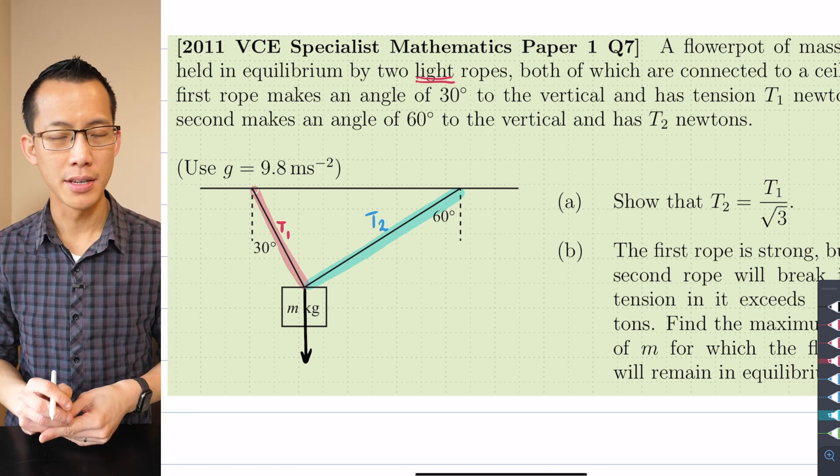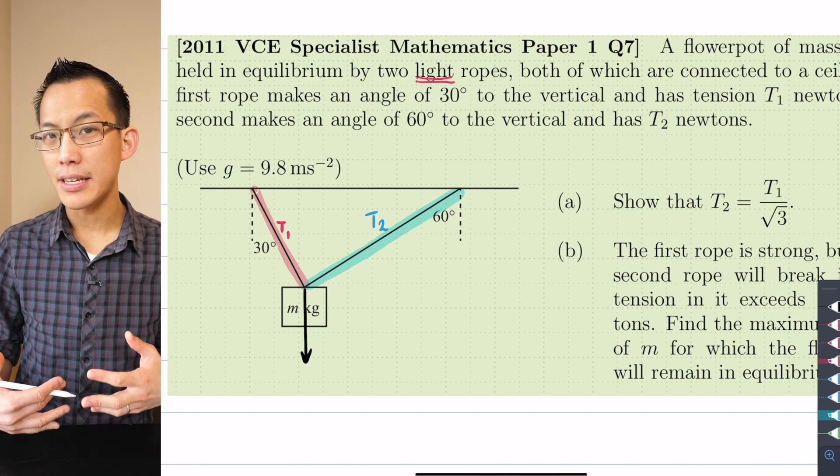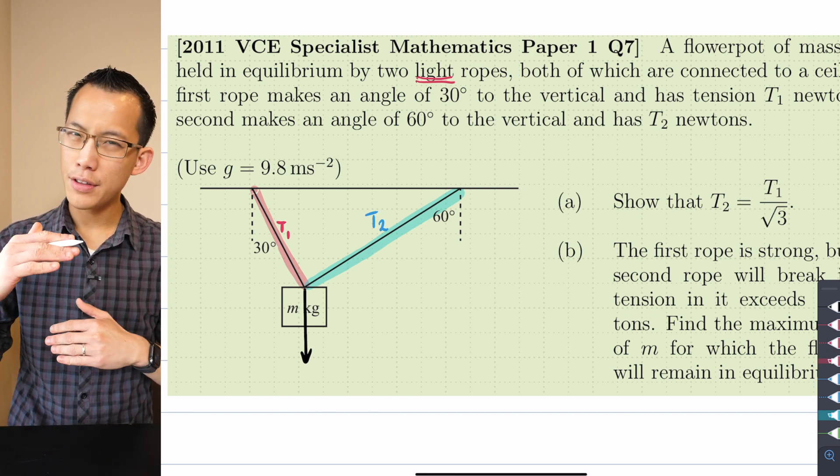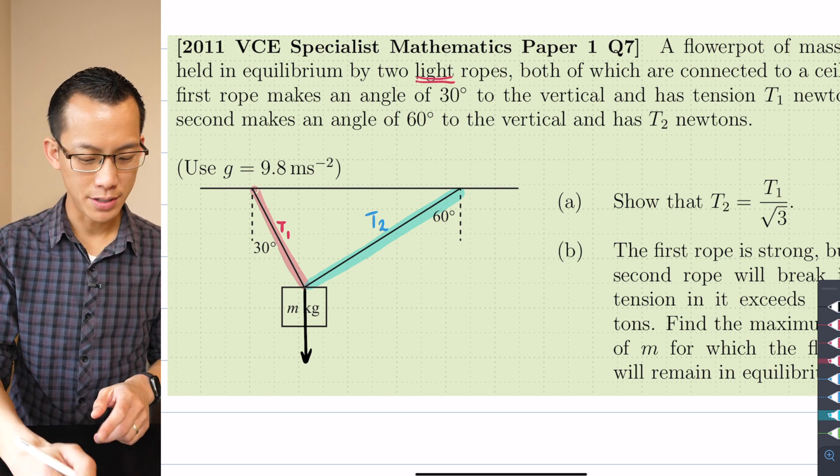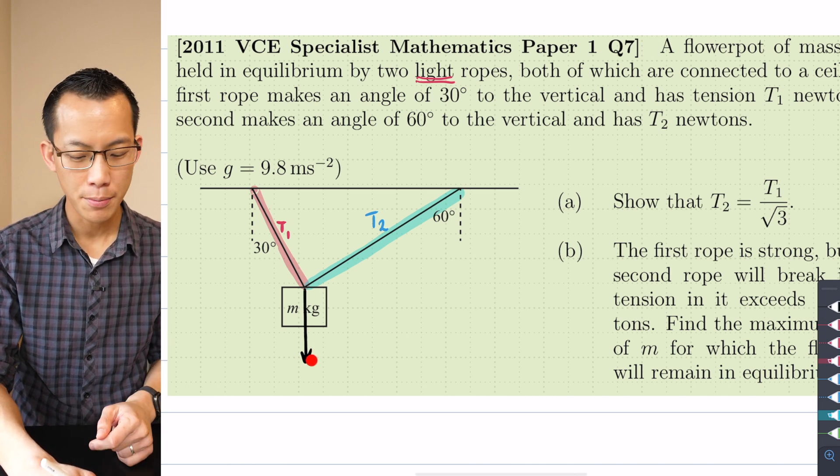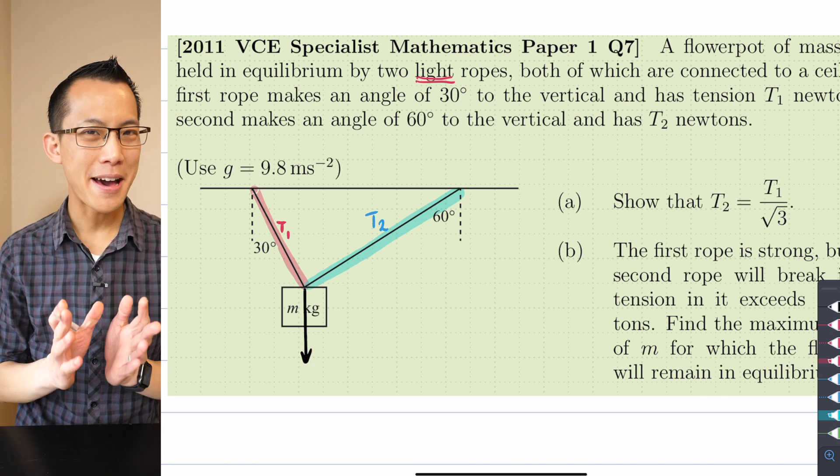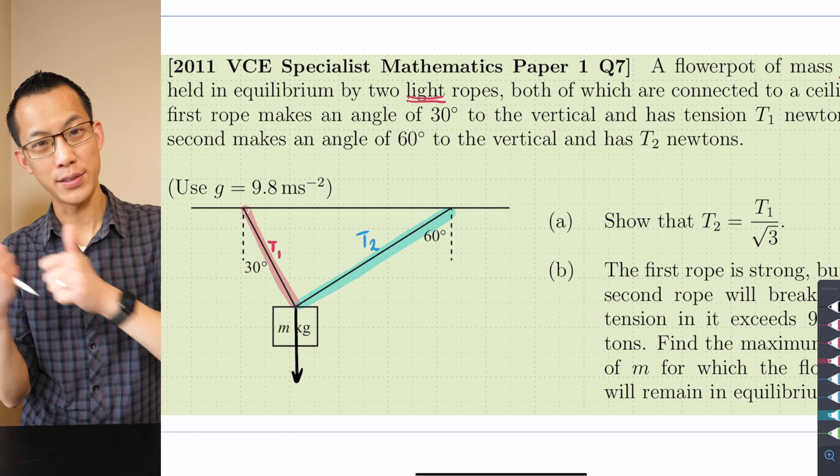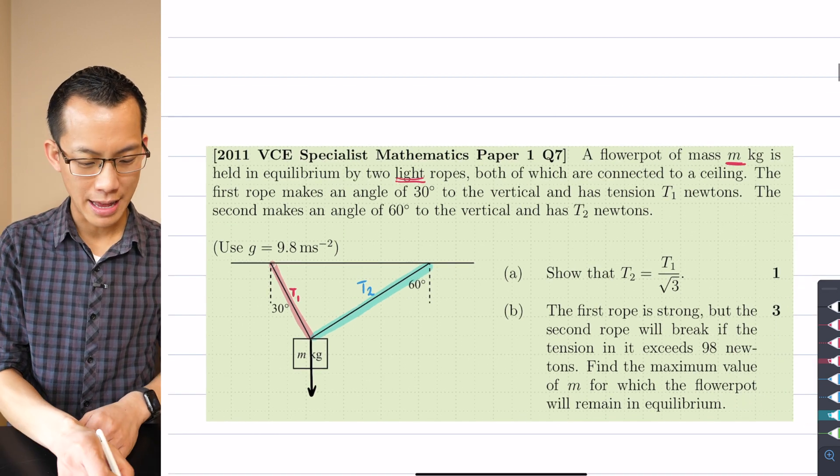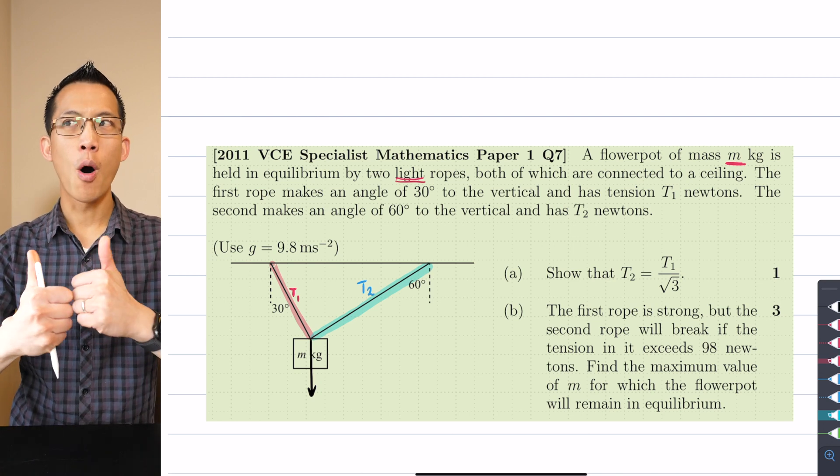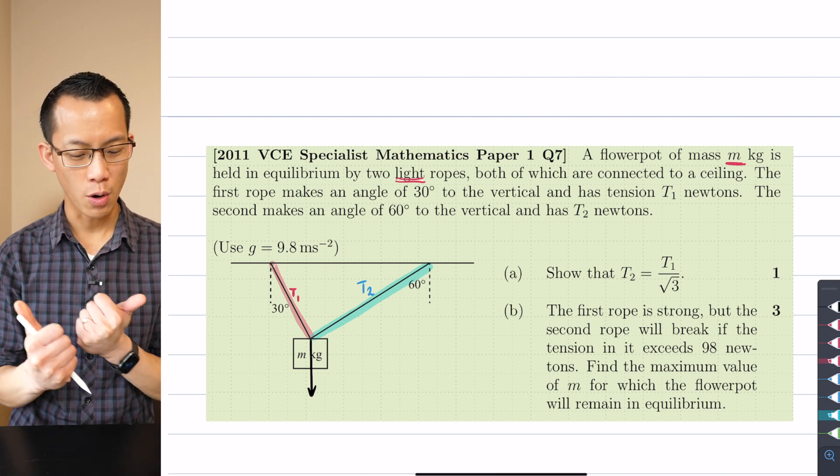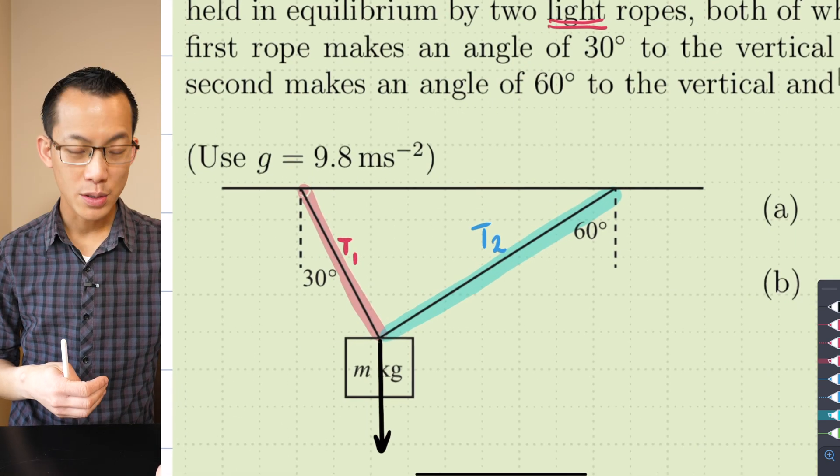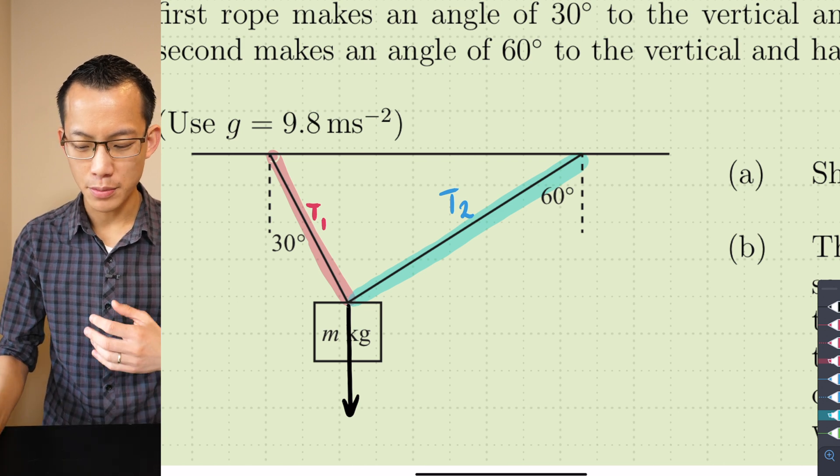While that's true, you can see in part a this equation here has nothing to do with the mass of the flower pot, it's independent of m. Therefore the up-down of this situation is not going to be relevant because if I'm thinking about it vertically I have to bring in the mass of the flower pot. What I'm going to do instead is think about it horizontally. The horizontal components or the horizontal forces resulting from each of these two ropes also have to be in balance.